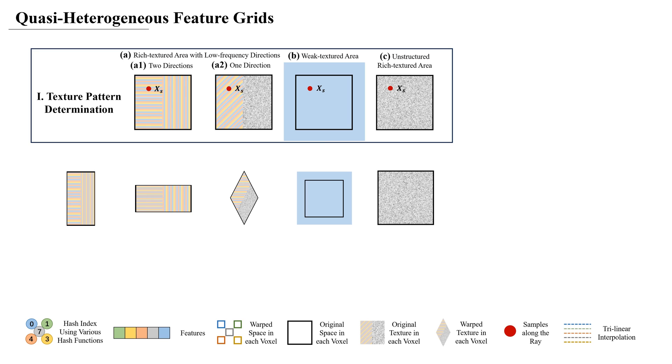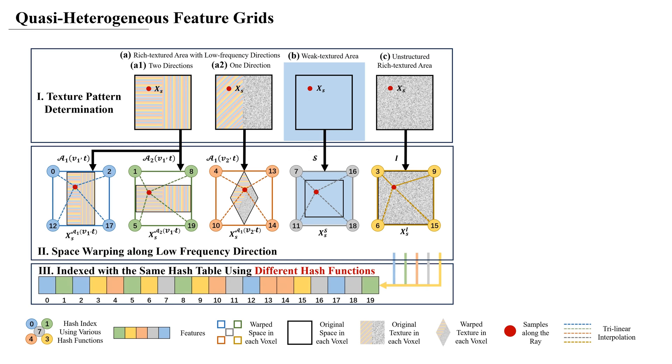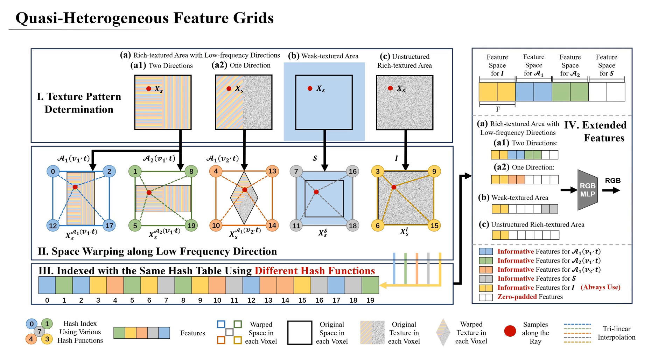Depending on the texture pattern, we apply the corresponding space warping to construct quasi-heterogeneous feature grids. Then, we use different hash functions to alleviate the conflict problem if warped to the same space. Lastly, features from various warping functions are concatenated to equal length and fed into a small MLP to predict the color.